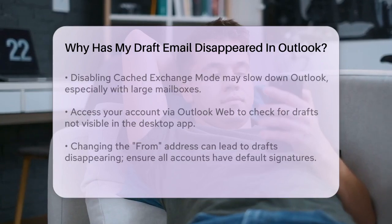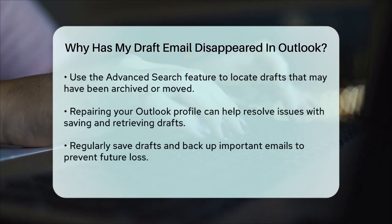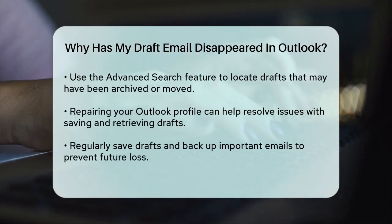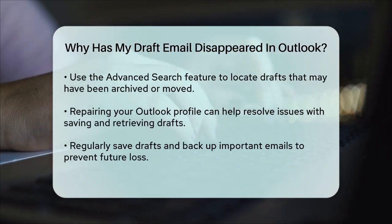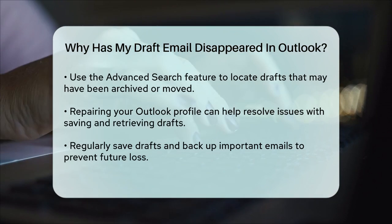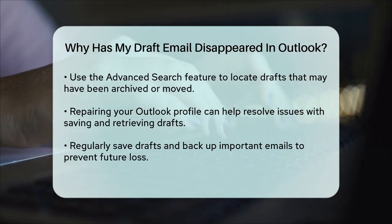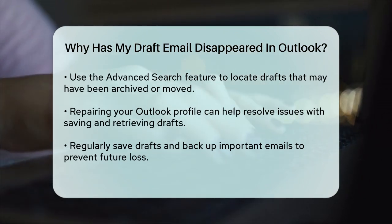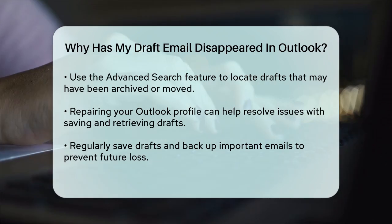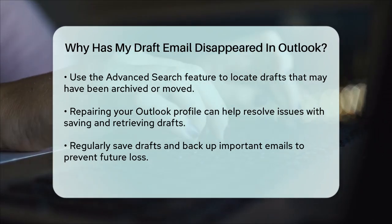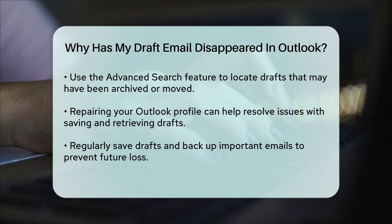If your draft was accidentally archived or moved to another folder, use the Advanced Search feature in Outlook. Go to the search bar, select Search Tools, then Advanced Find, and specify detailed search criteria like the date range when the draft was created or keywords from the draft content.